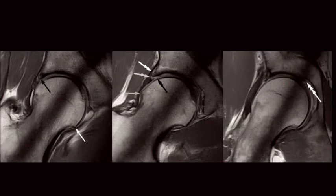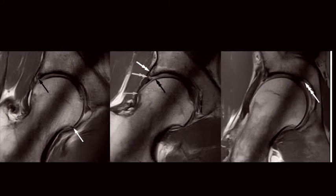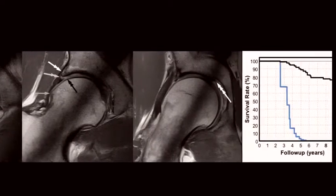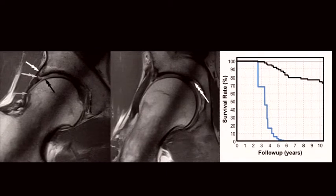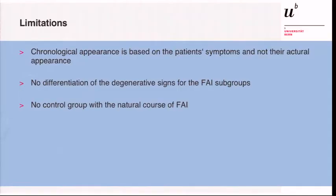This translates to a poor prognosis when those factors are counted together. We tried to counsel these patients at the time, noting that degenerative signs like these can lead to an early poor result. The chronological appearance is based on when the patient presents with symptoms, so the timeline reflects symptom onset rather than actual lesion occurrence — a central osteophyte may have occurred much earlier but is only seen at first presentation.